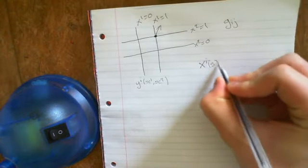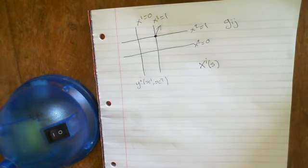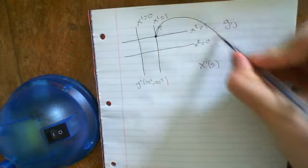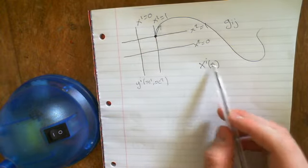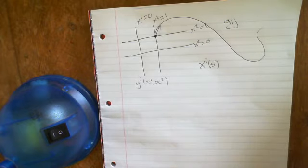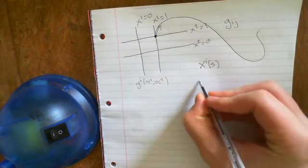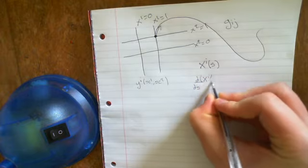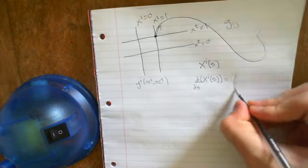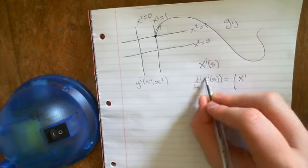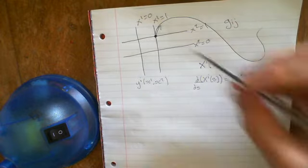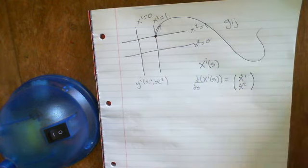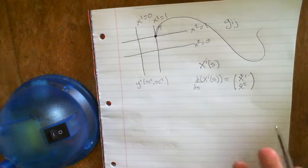We have our path relative to the x coordinate system. This is going to be x^i as a function of s. That means we've got some curve in this space — that's the path the particle is going to follow. It's parameterised in terms of a parameter s, so x1 is a function of s and x2 is a function of s. We're just using parametric equations. We can then take the derivative with respect to s, giving us a tangent vector: x1-dot and x2-dot, where the dot denotes the derivative with respect to s. That is our tangent vector relative to the x-coordinate system of this curve at every point.